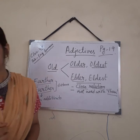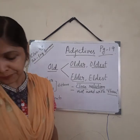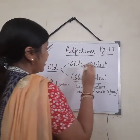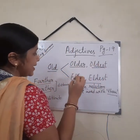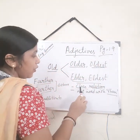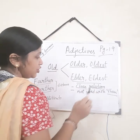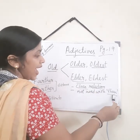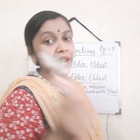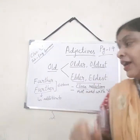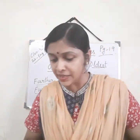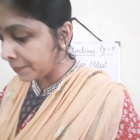So let us start with exercises J and K. Remember: older and oldest, elder and eldest. Elder and eldest are used for close relations, and we don't use 'than' in the comparative degree for elder. With this information, let us solve exercise number J.